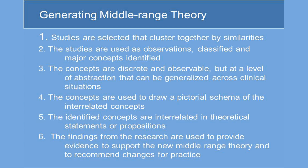This six-step process of generating middle-range theory begins: one, studies are selected that cluster together by similarities. Two, the studies are used as observations, classified, and major concepts identified. Three, the concepts are discrete and observable but at a level of abstraction that can be generalized across clinical situations. Four, the concepts are used to draw a pictorial schema of the interrelated concepts. Five, the identified concepts are interrelated in theoretical statements and propositions. And six, the findings from the research are used to provide evidence to support the new middle-range theory and to recommend changes for practice.